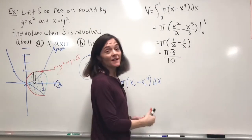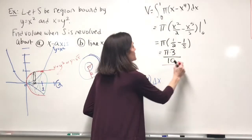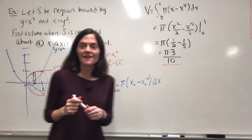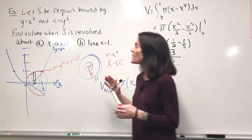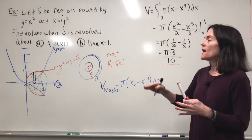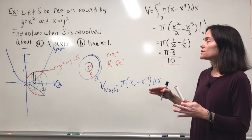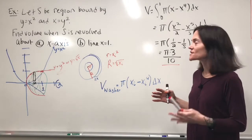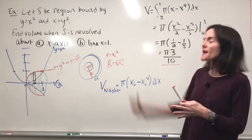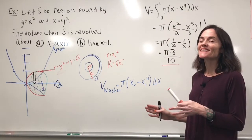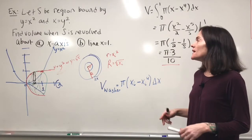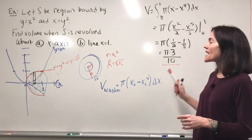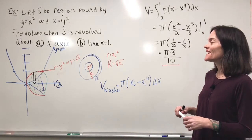This function is not hard to integrate — polynomial power rule on every term. The limits of integration make the arithmetic easy: it's one half minus one fifth, which is 5 over 10 minus 2 over 10. We get 3pi over 10. This is our volume for part A, revolving about the x-axis.